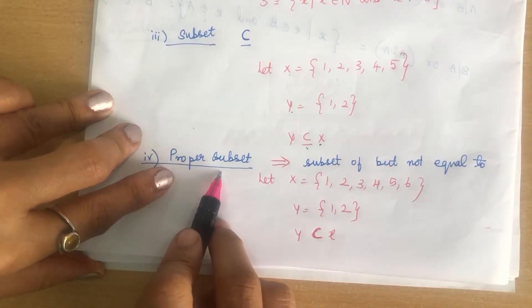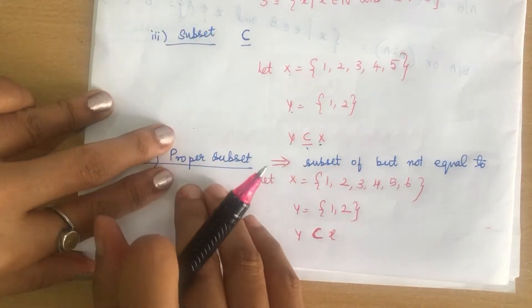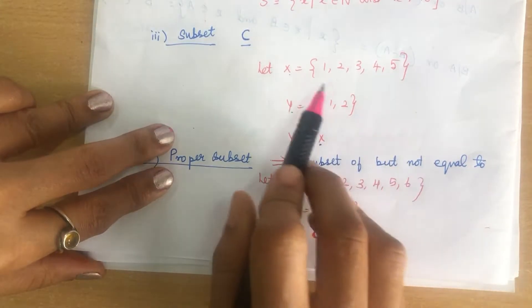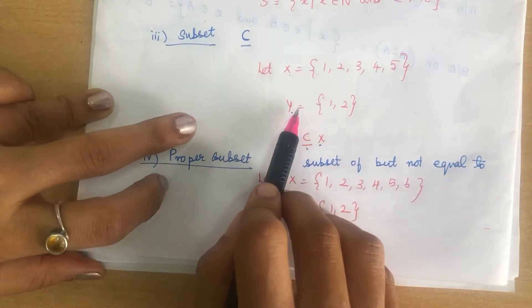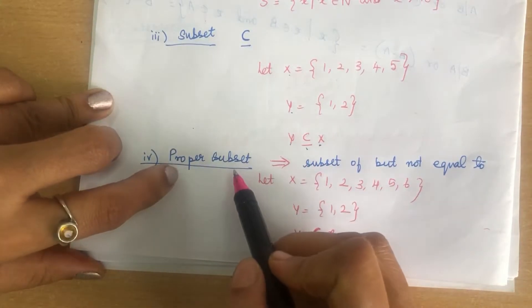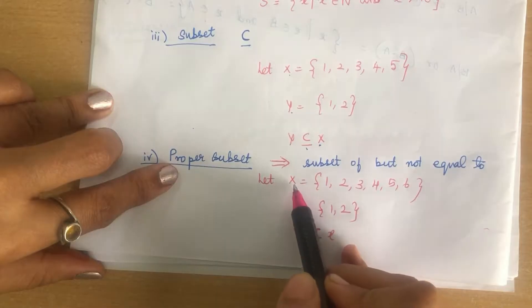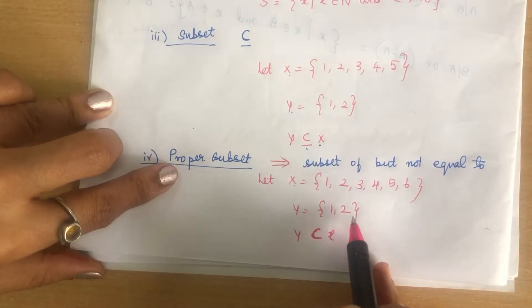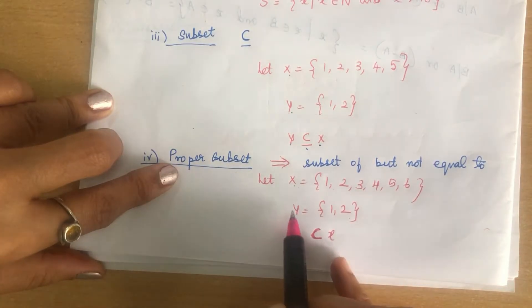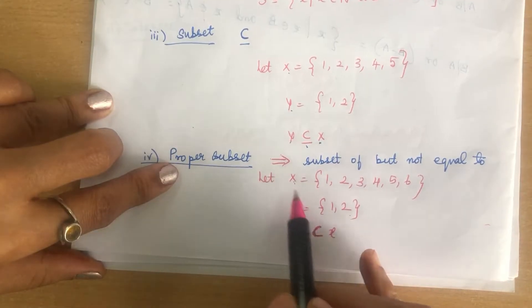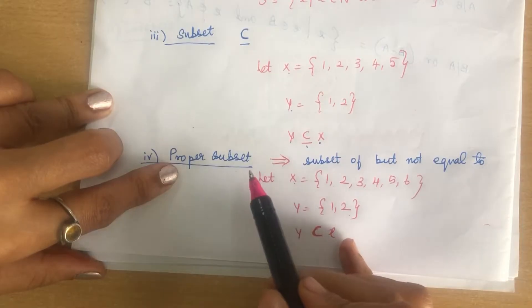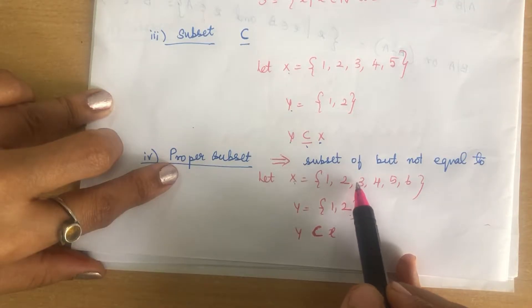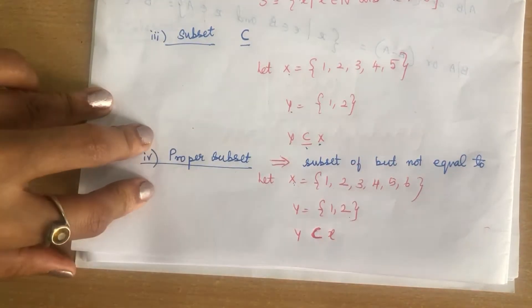Next is proper subset. Proper subset is similar to subset, but with one difference: it is a subset of but not equal to. In a subset, Y can be equal to X. But in a proper subset, Y cannot be equal to X. So if X = {1,2,3,4,5,6} and Y = {1,2}, Y is both a subset and a proper subset of X. The difference is that in a proper subset, Y contains fewer elements than X and is not equal to X.